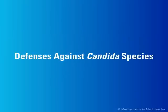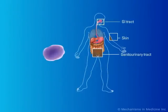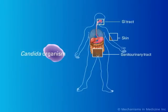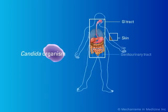Defenses Against Candida Species. Candida species are normal commensals of the human body. These organisms may be readily found on the skin, in the genital tract, and on the epithelial surface of the gastrointestinal tract. To prevent infection by Candida species,